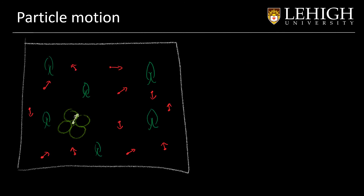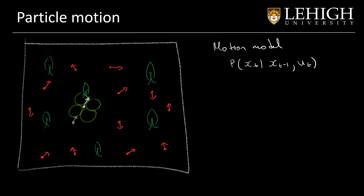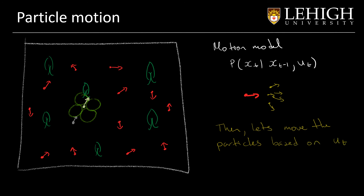Now let's talk about particle motion. In our previous video, we talked about how the robot can move, and for that motion we have a model — the probability function of the new location based on the previous location and the control input. For a given particle representing a robot that moves, there are many options where the robot can go, but we will have a model for that motion. We apply that for every particle based on the control input U, and for each particle we will move it to the new position, representing the particle after the motion.